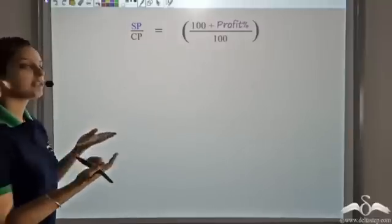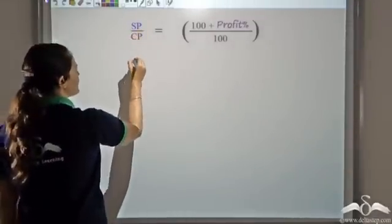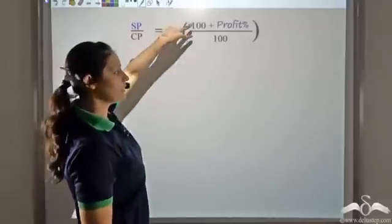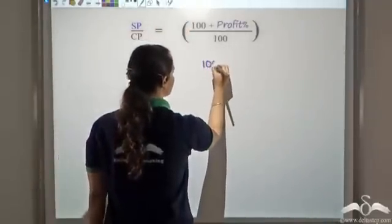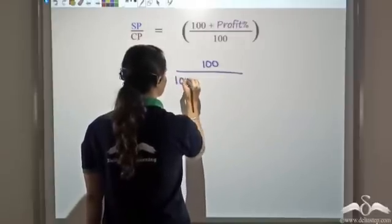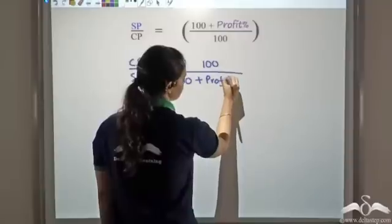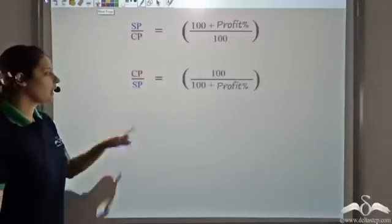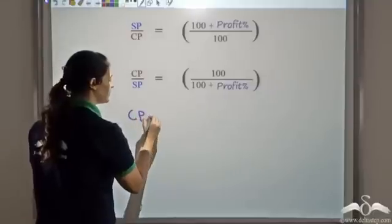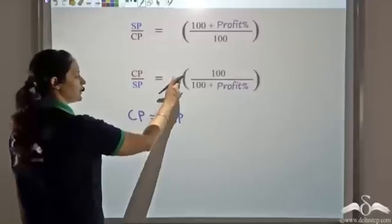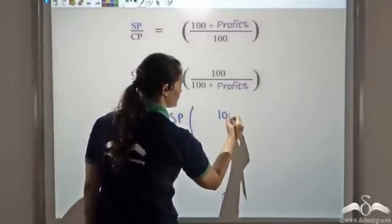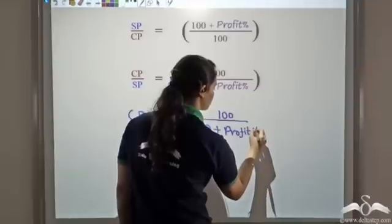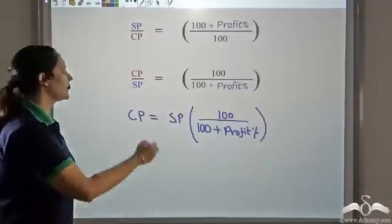Now if I reciprocate both these terms, the equality would not change. So CP upon SP equals 100 divided by (100 plus profit percent). From this I can find the cost price: cost price equals selling price times 100 divided by (100 plus profit percent). This is my cost price formula.